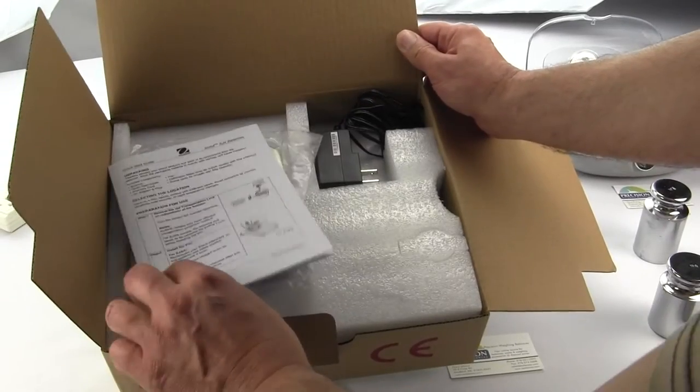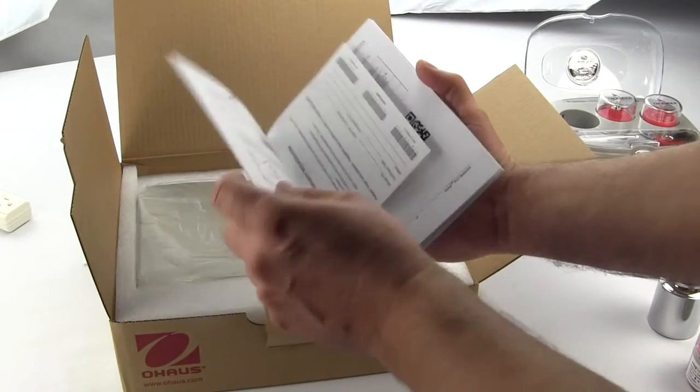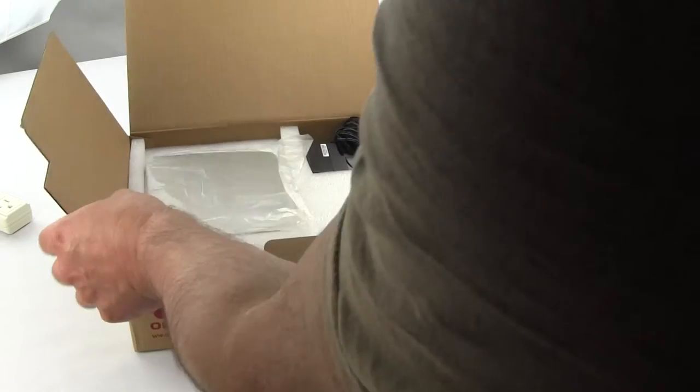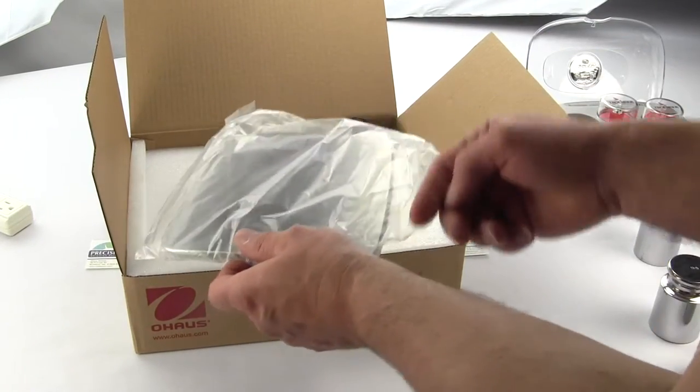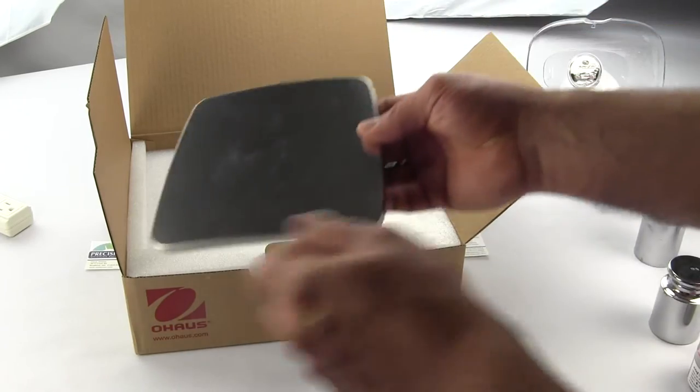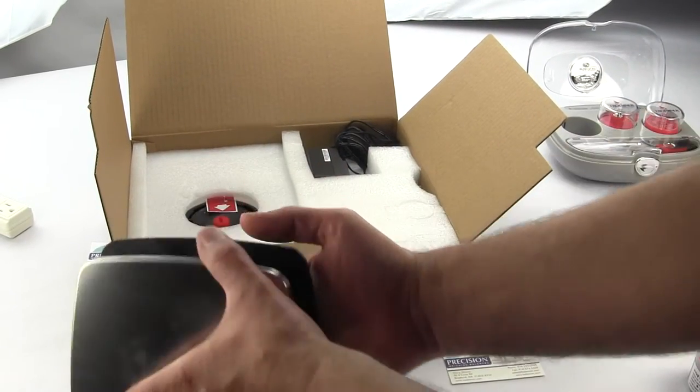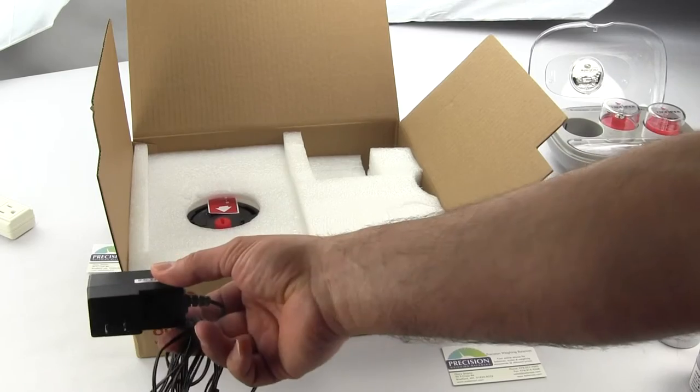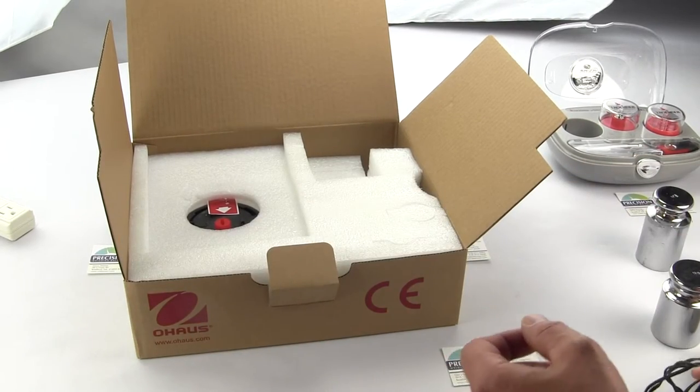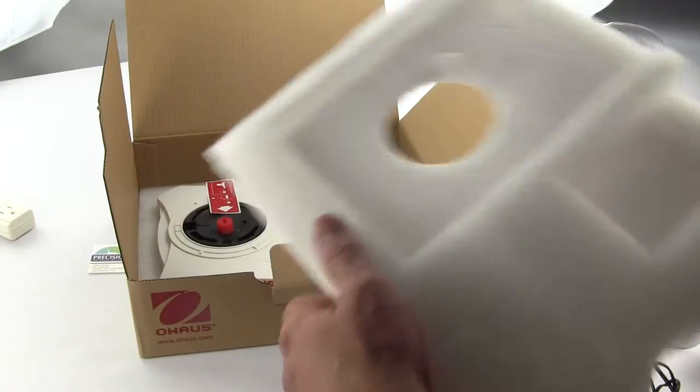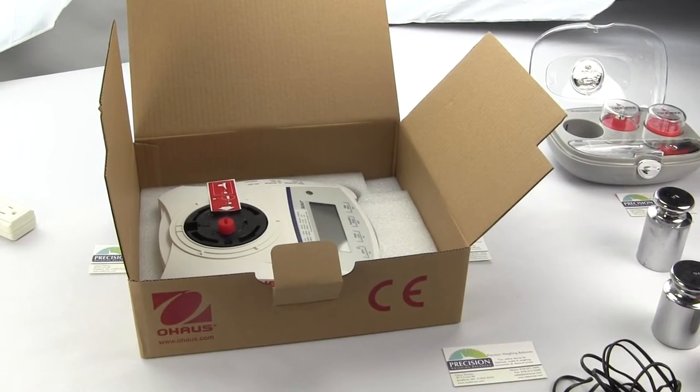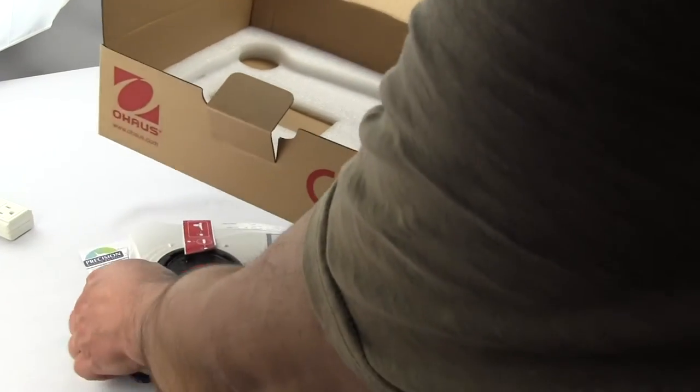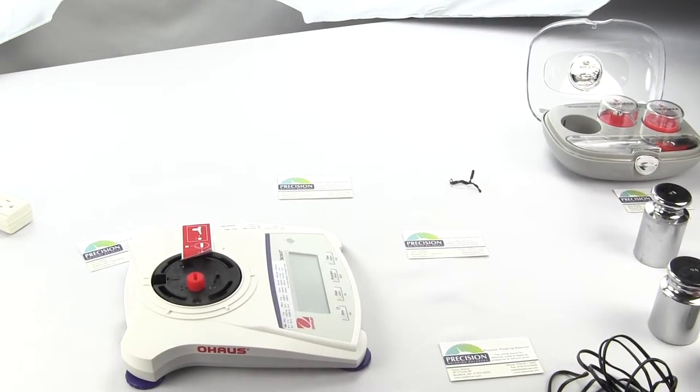When you open it up, there'll be a user manual in here. There's also a product warranty card. You have stainless steel platform, subplatter, comes standard with an AC adapter 110 volts - we only sell in the US - and foam to hold the scale in place. And then there you have it, there's your digital scale.